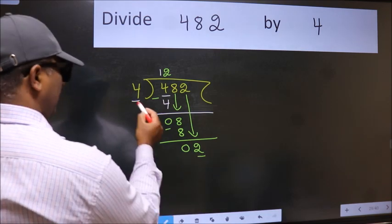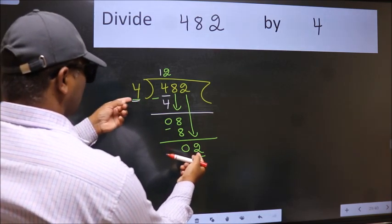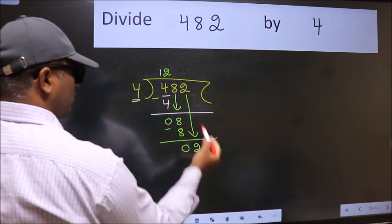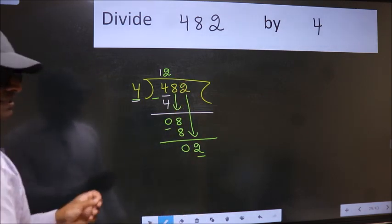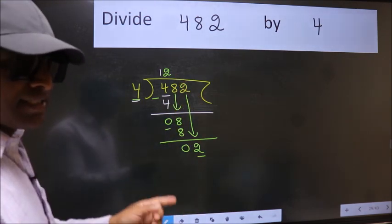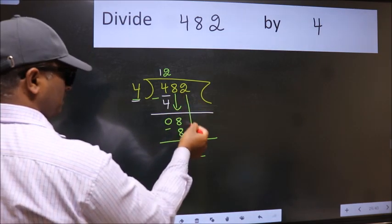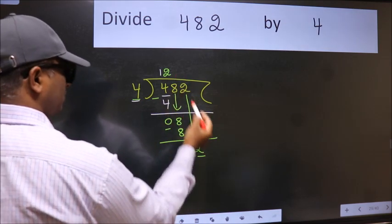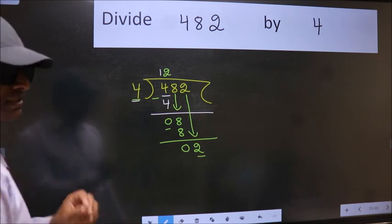Here we have 2 and here 4. 2 is smaller than 4. So what many do is they directly put a dot and take 0, which is wrong. Why is it wrong? Because you just brought this number down, and in the same step you want to put a dot and take 0, which is wrong.